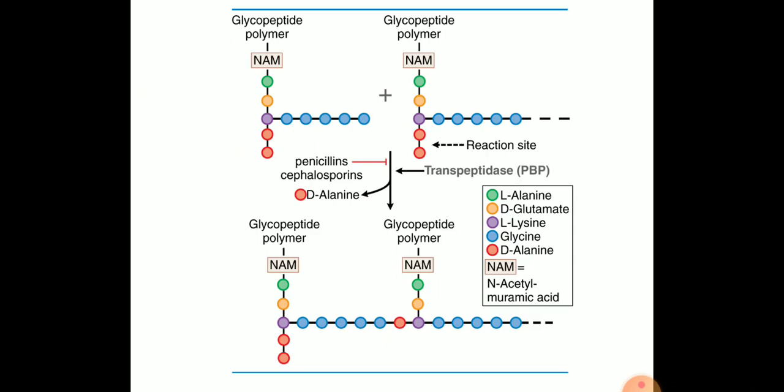Now most of the beta-lactams including penicillin interfere with bacterial cell wall synthesis. Chemically the cell wall is known as peptidoglycan which is a mesh of peptide and cross-linked sugar polymers lying just outside the cytoplasmic membrane shown in the previous slides.